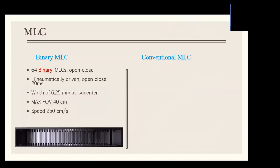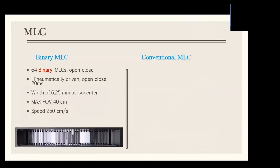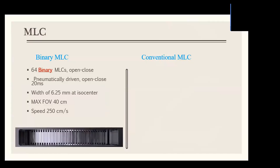Regarding MLC specifications, the system is equipped with 64 binary MLCs where at any moment each leaf is programmed to either fully block the field or be fully open during radiation. It has a resolution of 6.25 mm at the isocenter and a maximum field of view of 40 cm; therefore the maximum field size is 5 by 40 cm.